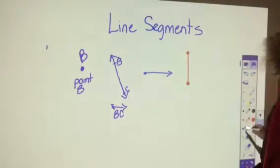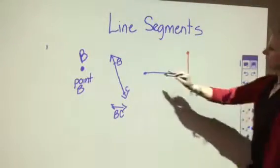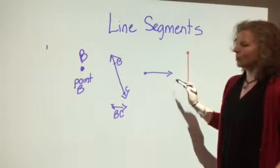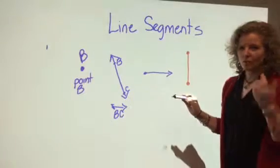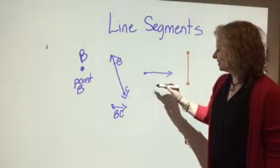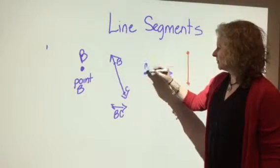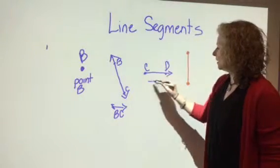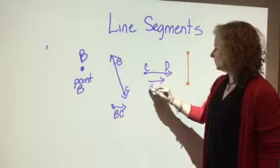And what's this one? It has one point, an end point, and then the arrow that goes forever in one direction. What do we call that? That would be ray CD.